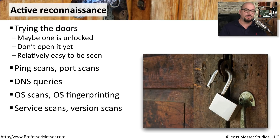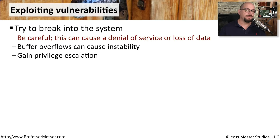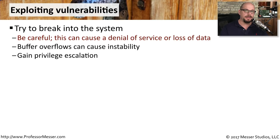Once you find a system with services running on it, you may want to perform service scans or version scans to see exactly what types of services are running on those systems. At this point, we've gathered quite a bit of information — we've passively discovered information about the organization, and we've actively seen what systems are available, what operating systems might be running, and what services might be running on those computers.